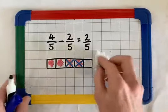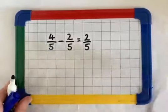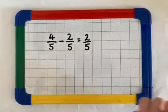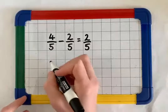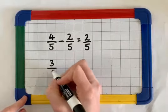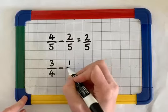Let's have a look at this again with one final example. This time, we can look at 3 quarters, and we're going to take away 1 quarter.